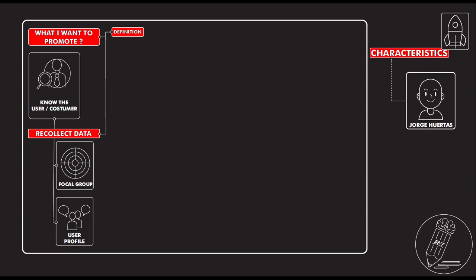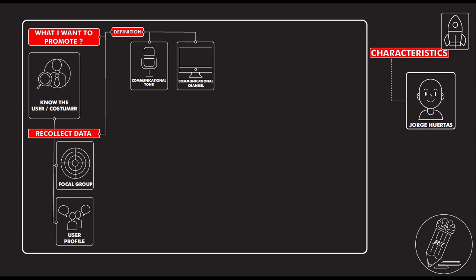After you know what you want to promote and who your user is, you need to start defining a few key things. The first is the communicational tone — how you want to address your target group, with which words and content. Then you need to figure out the communication channel: will it be digital, analog, or by voice? Then you need to figure out if you want a copy or a specific quote that people will remember, because that's what stays with people.